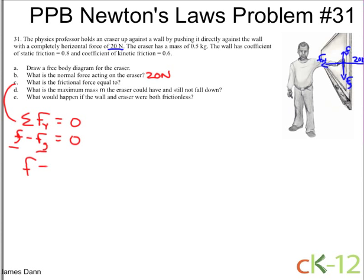So the friction force is equal to the force of gravity, which is mass times the acceleration of gravity. And that's equal to 0.5 kilograms times 10 meters per second squared, which is 5 newtons.